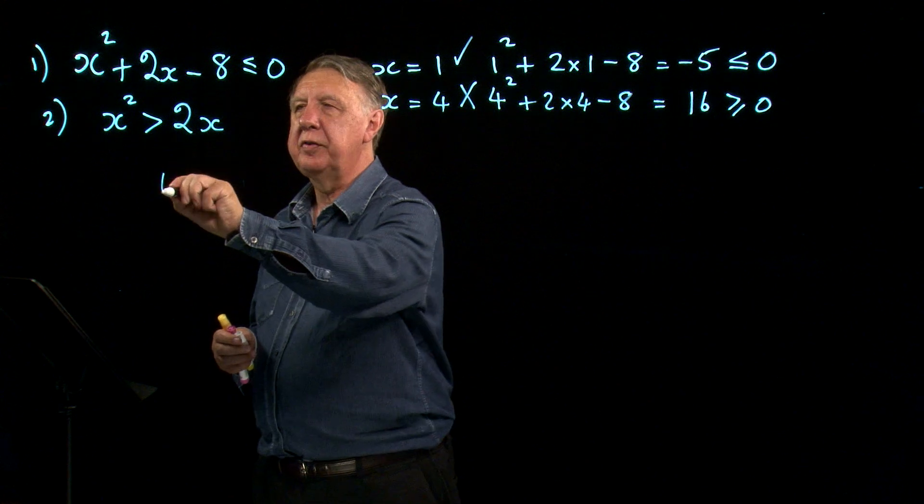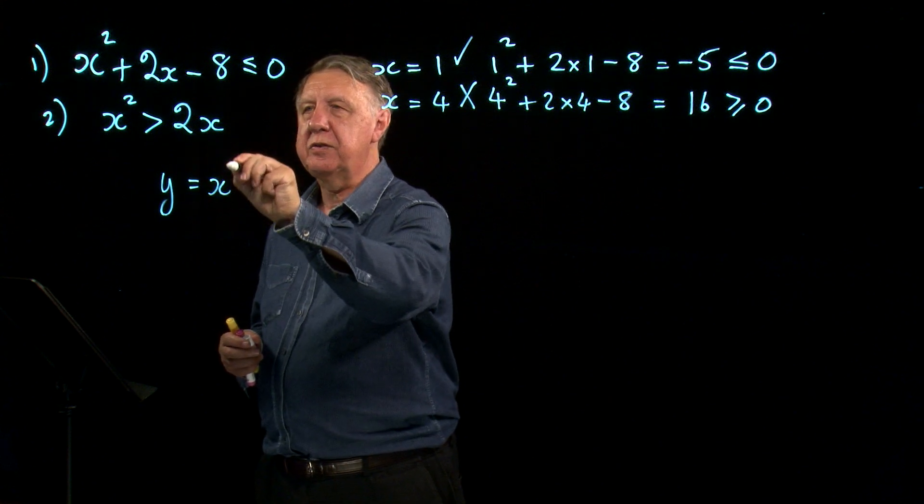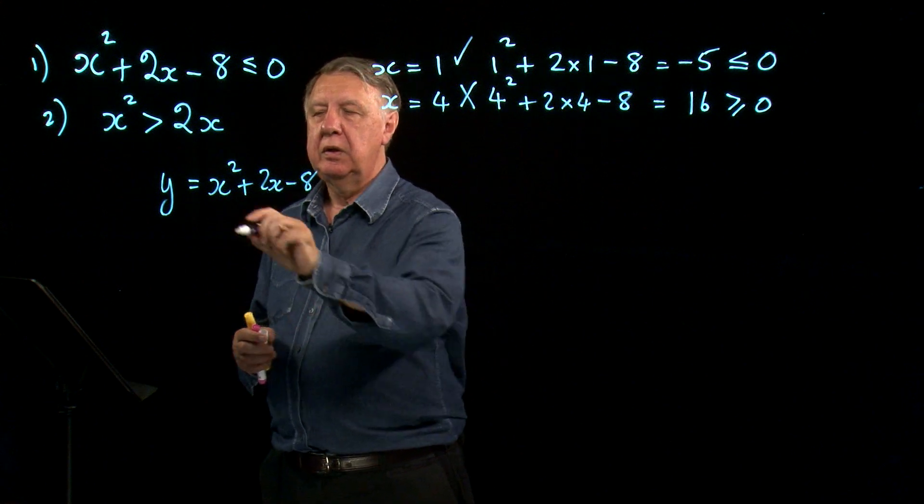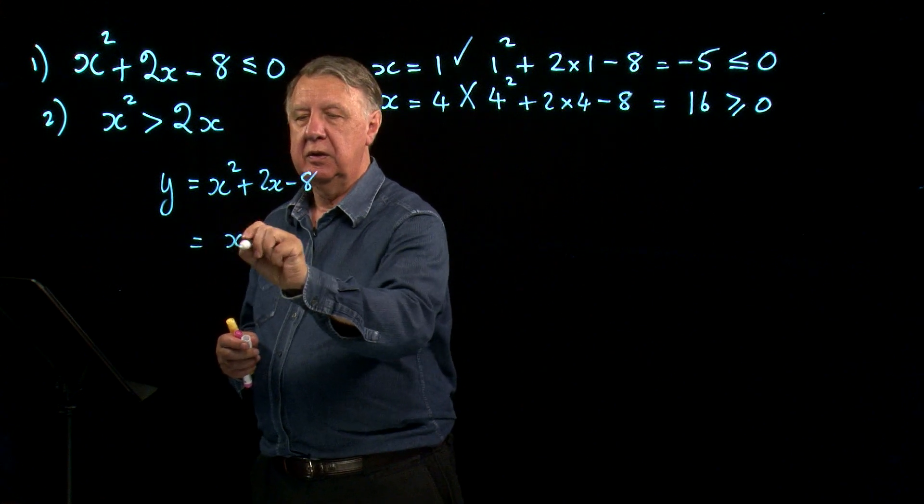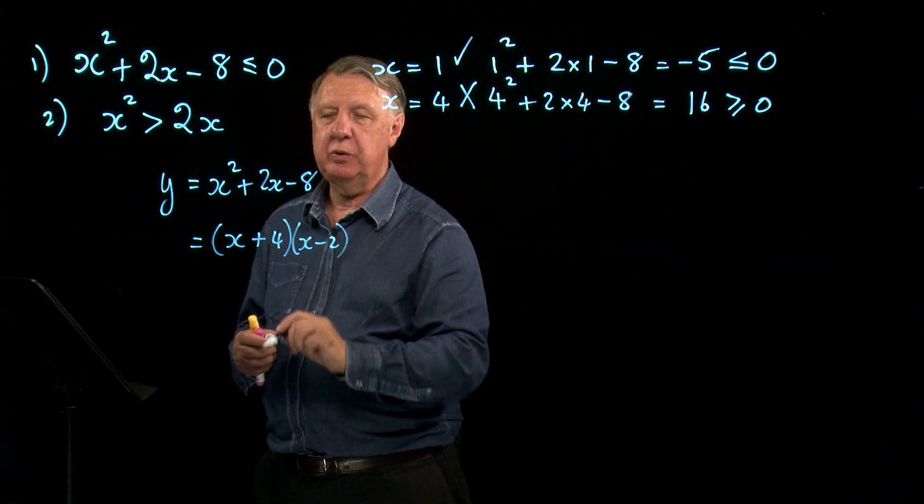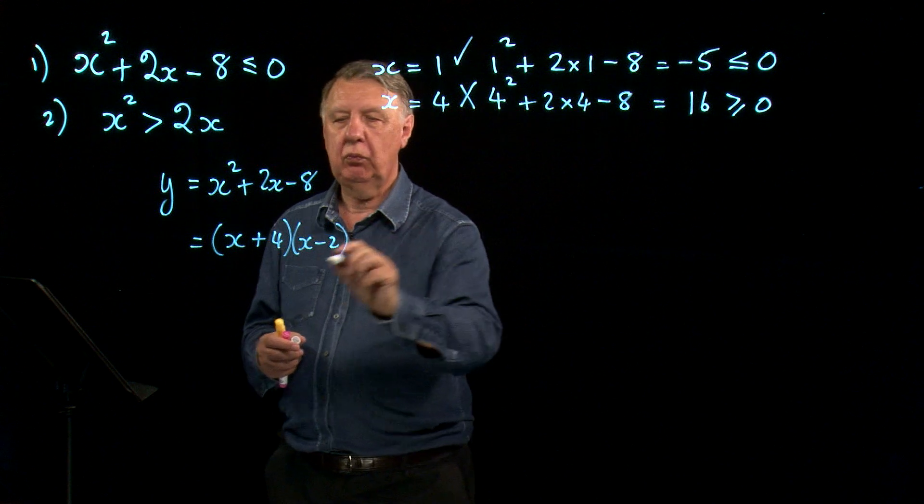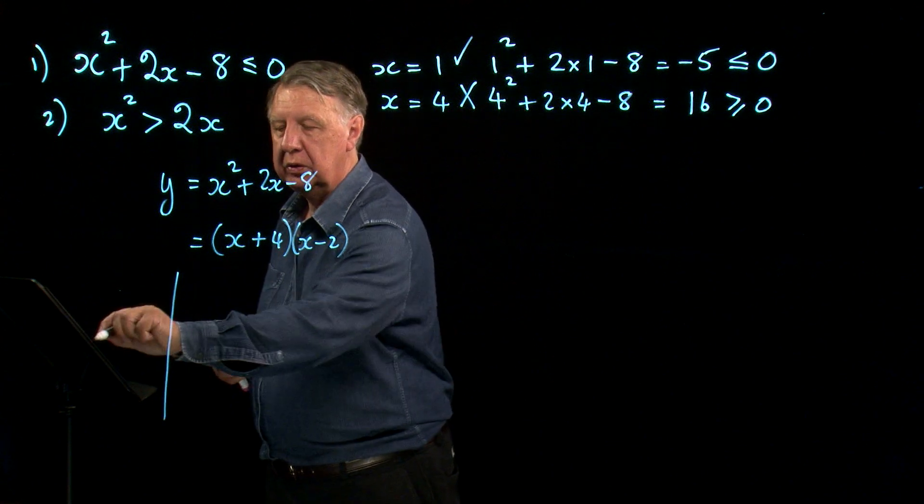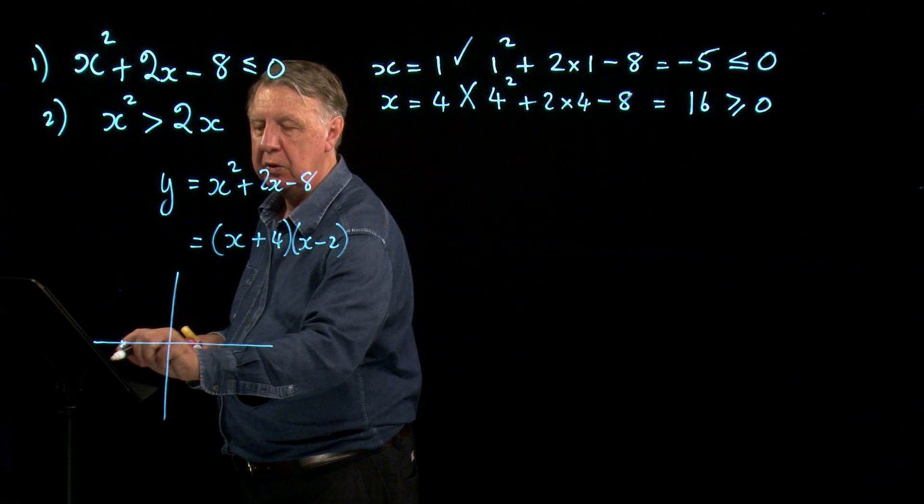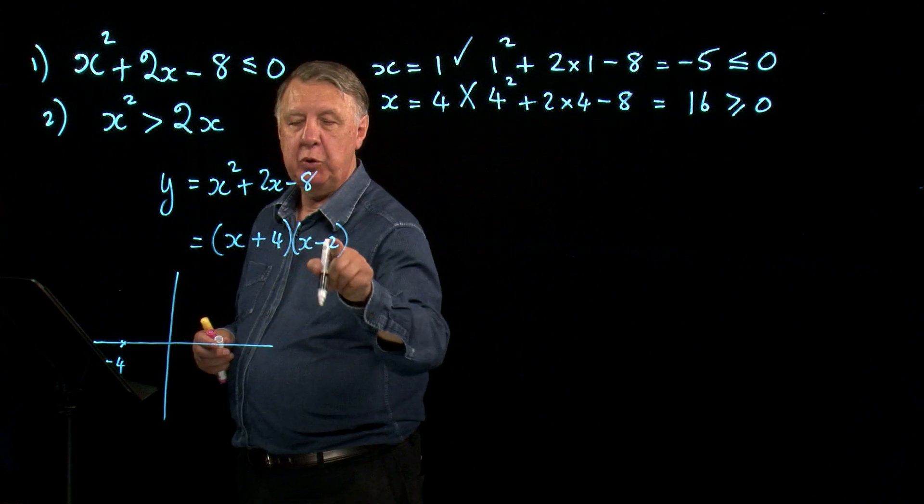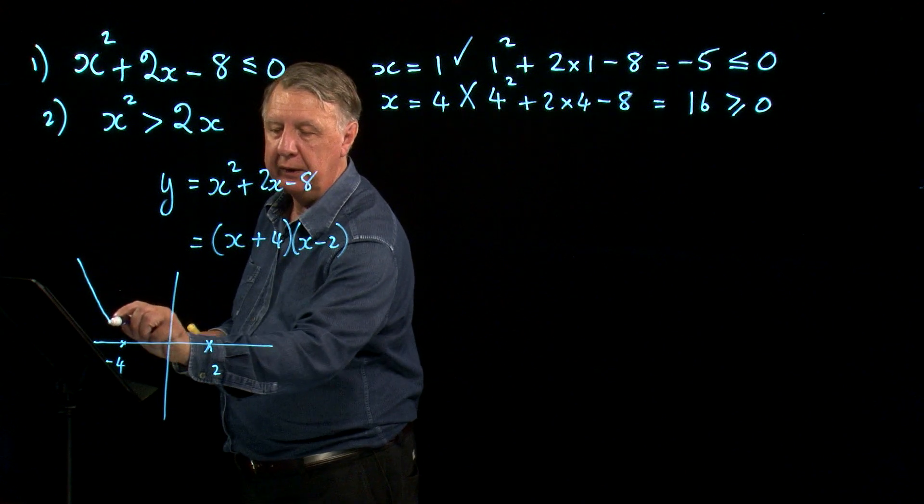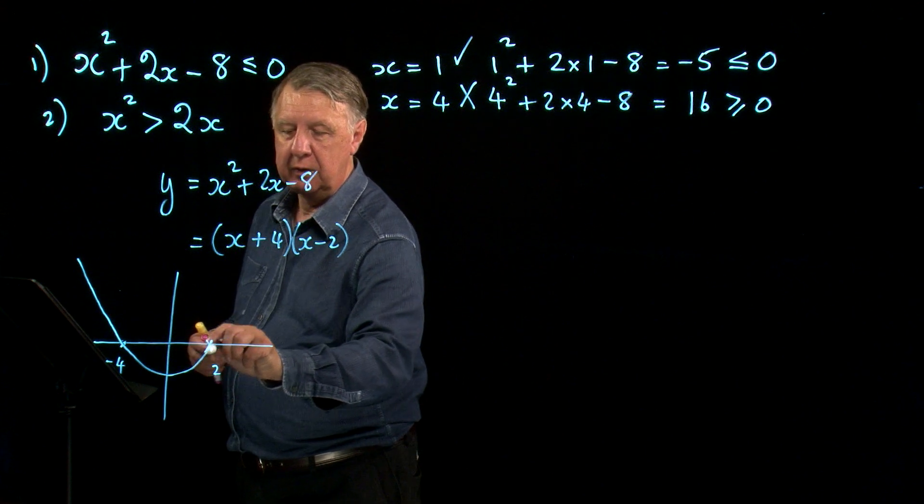I'm going to approach this from a graph. If I look at the graph of y equals x squared plus 2x minus 8, then let's factorize this: plus 4, take away 2. So it will cross the axis at negative 4 and at positive 2.